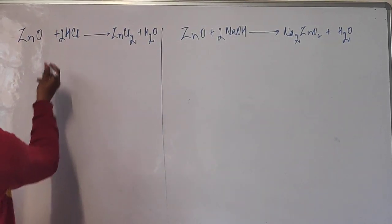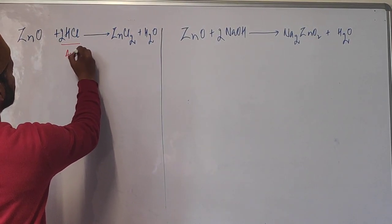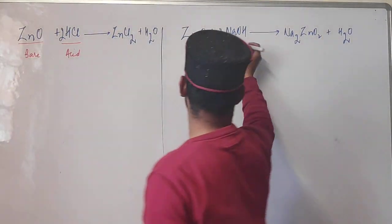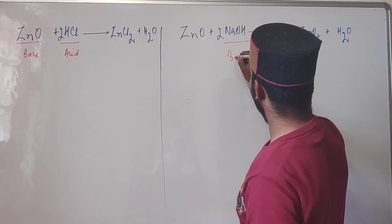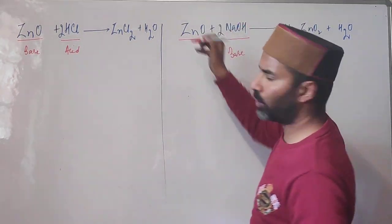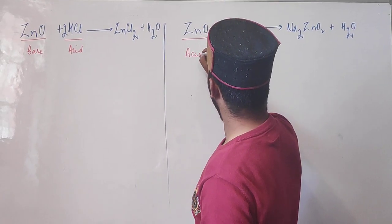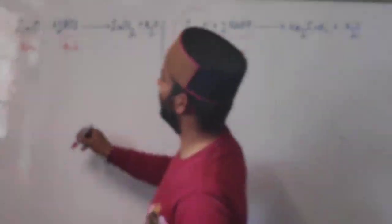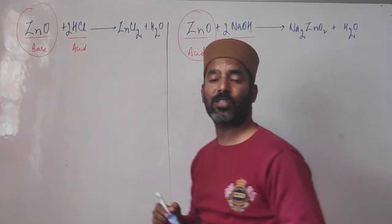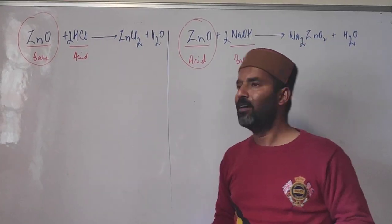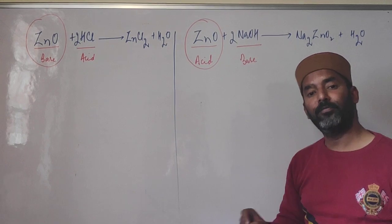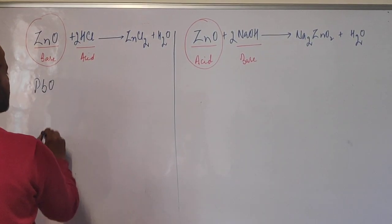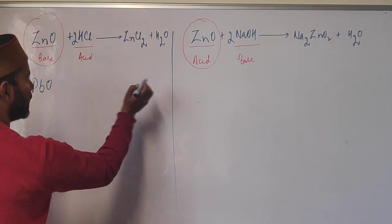In the reaction with HCl, zinc oxide acts as a base. In the reaction with NaOH (a well-known base), zinc oxide acts as an acid. Zinc oxide thus shows both characters, which is why we say zinc oxide is an amphoteric oxide. Similarly, lead oxide PbO is also amphoteric — it reacts with both acids and bases.